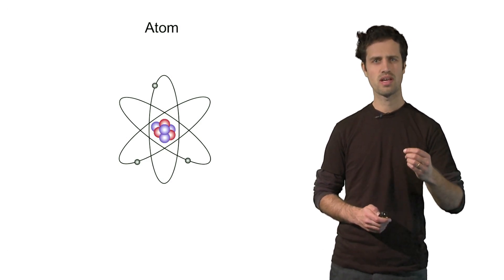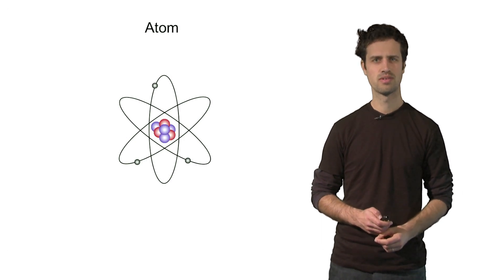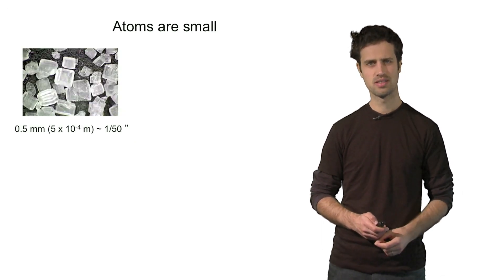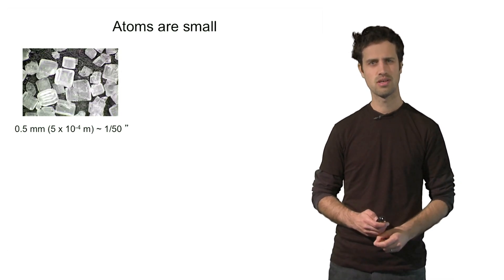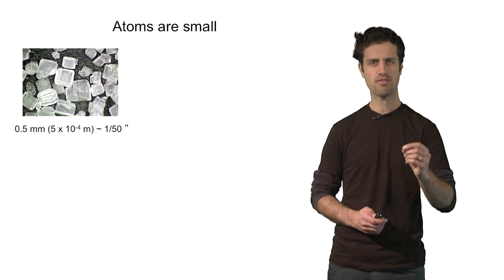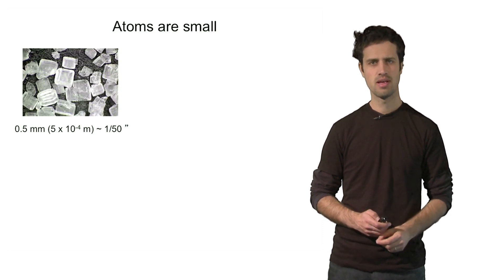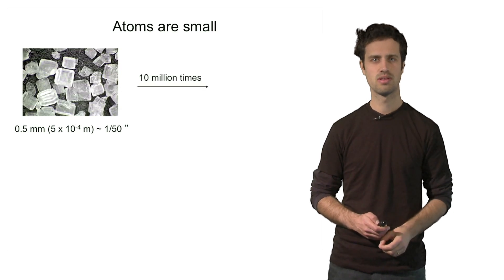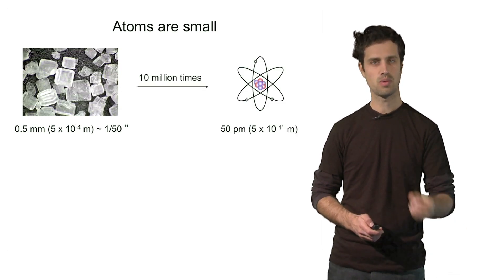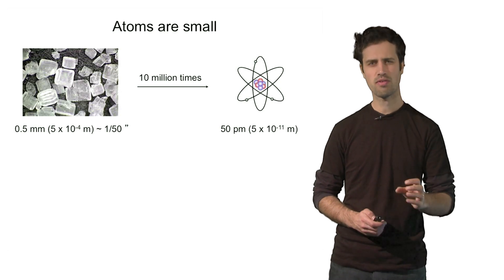That's because they are so amazingly small. How small are they really? Well, let's do a comparison. Let's consider a grain of salt. A small grain of salt is about half a millimeter. And if you shrink a grain of salt by about 10 million times, then you end up with the size of an atom, which is about 50 picometers.